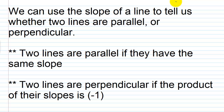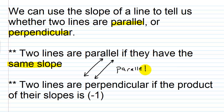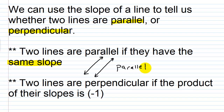We can use the slope of a line to tell us whether two lines are parallel or perpendicular. Two lines are parallel if they have the same slope. Two parallel lines would look something like this — if you graph both lines, they're never going to cross each other at any point. So if they have the same slope and different y-intercepts, they're parallel. If they have the same slope and the same y-intercept, they're the same line.